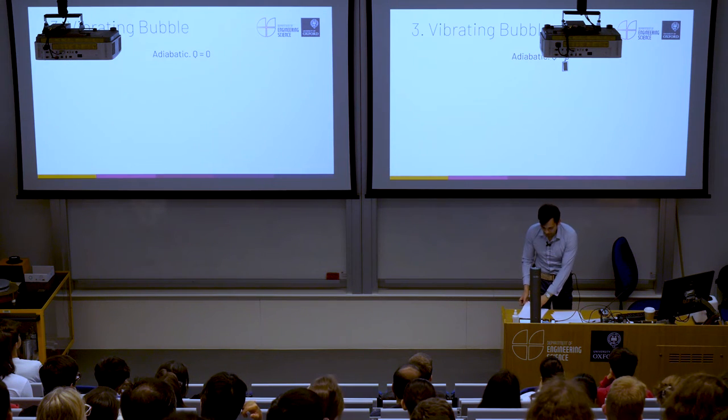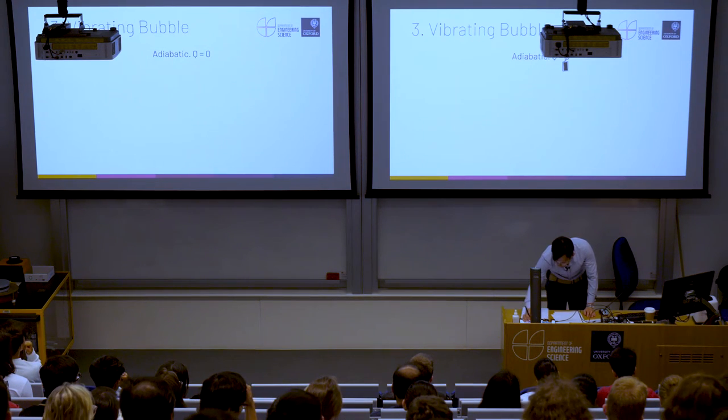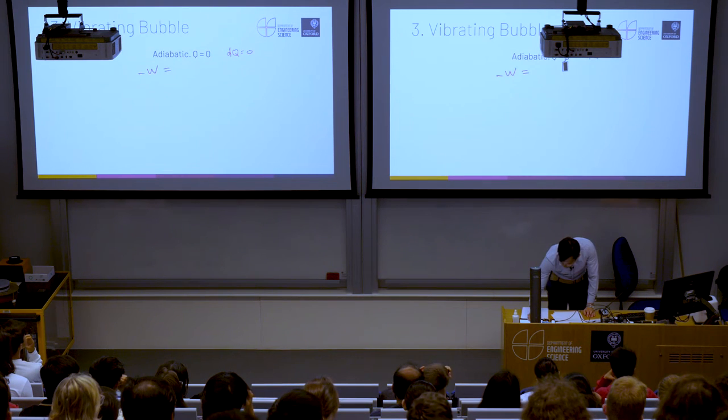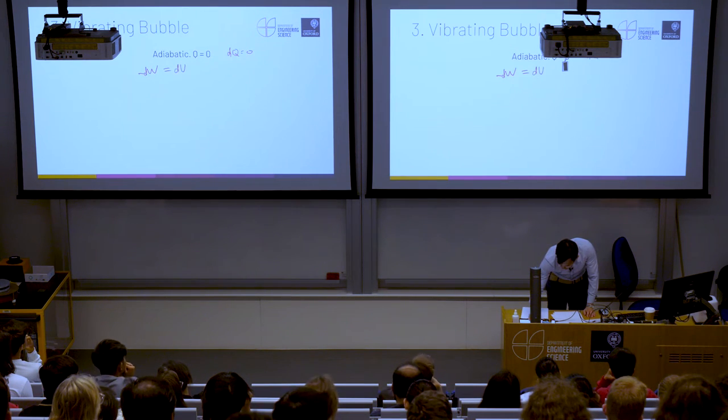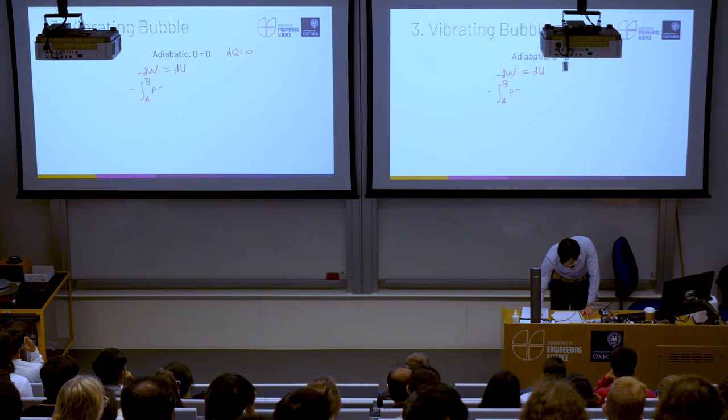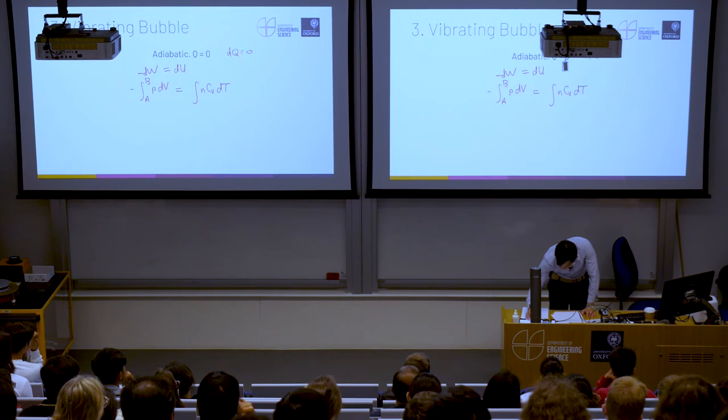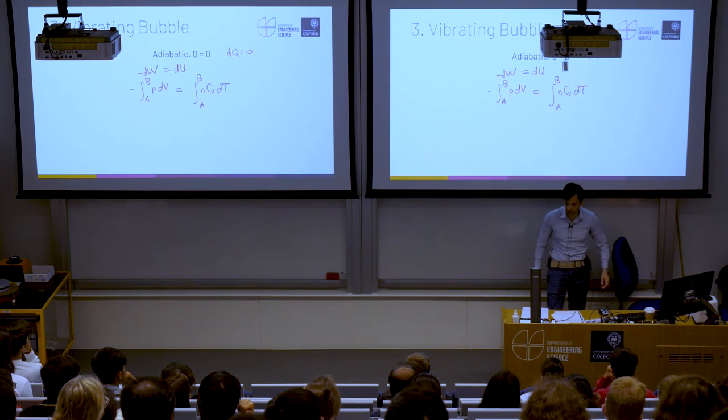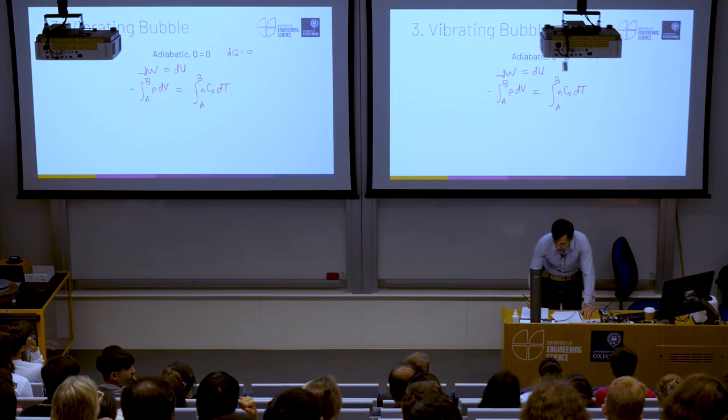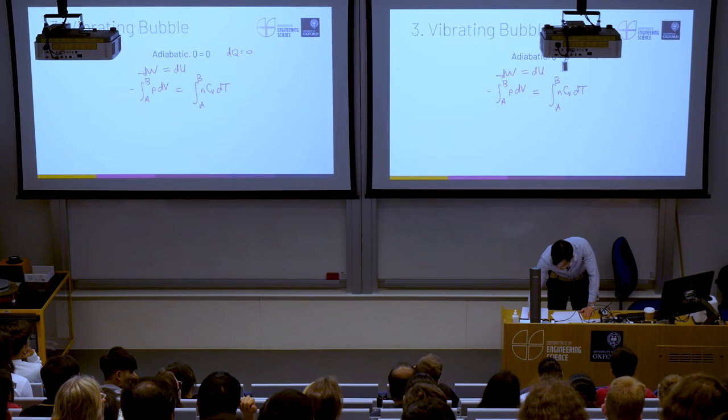So the next one is the adiabatic case. So adiabatic implies, again, that our Q is zero, but similarly, dQ is equal to zero. So now our work is equal to our internal energy. So we get this from the previous expressions. Again, we can now relate pressure to volume as we did before. We realize that it's inversely proportional. And basically, through some additional manipulations, we'll see this relationship to be true.